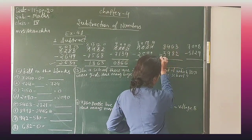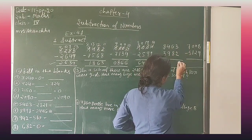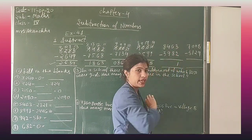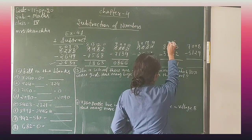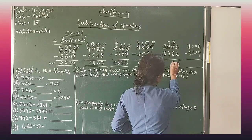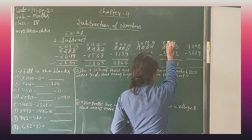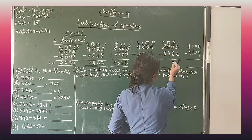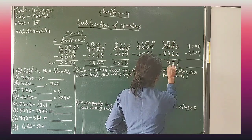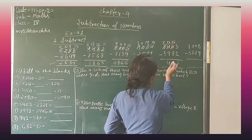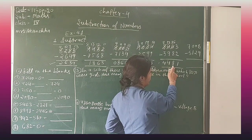8463 minus 3982. 3 minus 2 is equal to 1. 6 minus 8 — borrow. Then this is 3, and 16 minus 9 is equal to 4. 7 minus 3 is equal to 4. And your answer is 4481.